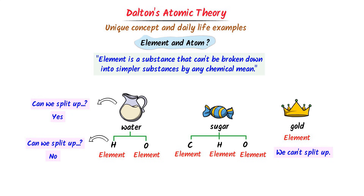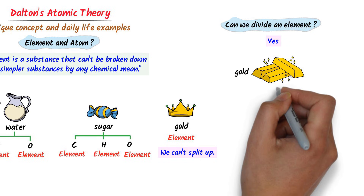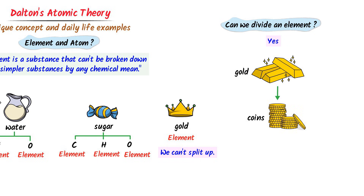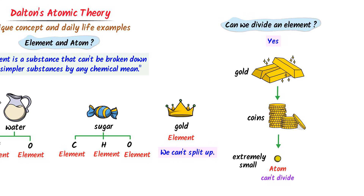Now let me ask you the most important question of this lecture: Can we divide an element? Pause the video and guess the answer. Well, the answer is yes. For instance, we can divide gold into smaller pieces. But note it down that if we keep dividing an element, we eventually reach a point where you cannot divide it further. So finally, we get extremely small pieces. Remember that these extremely small pieces of an element are called atoms.